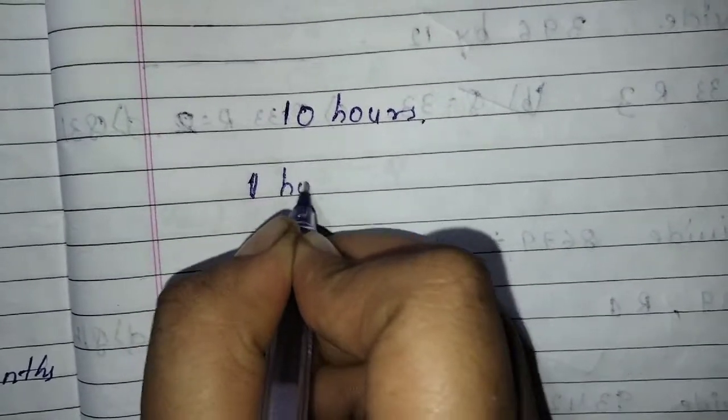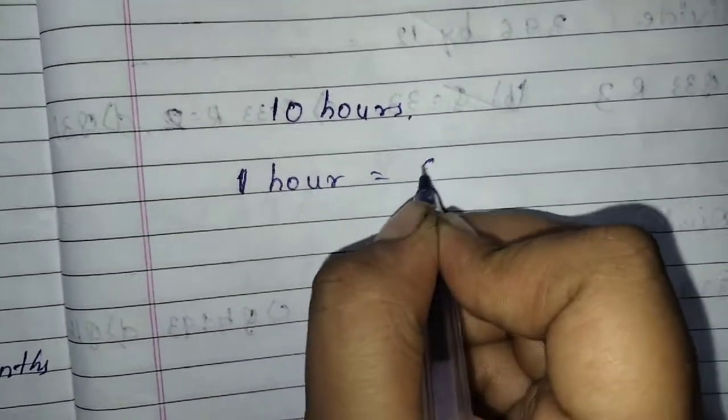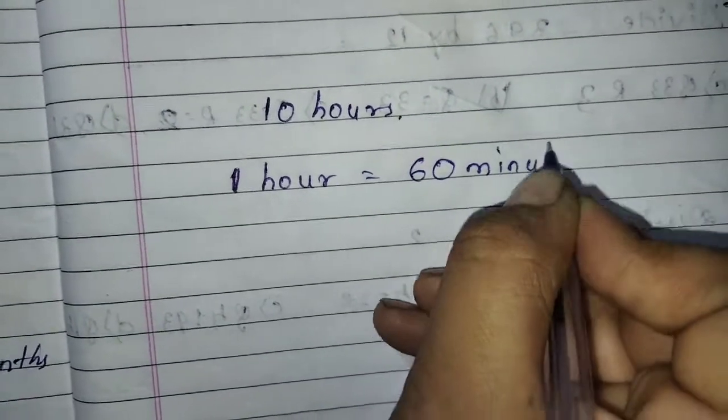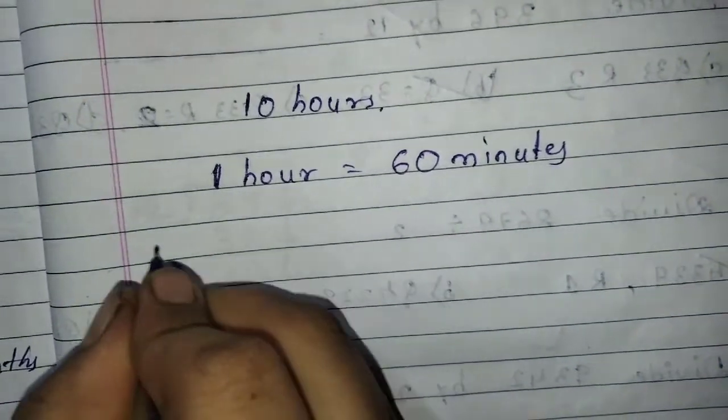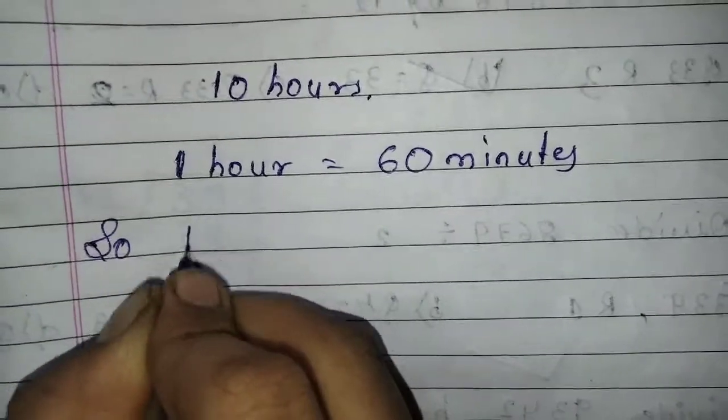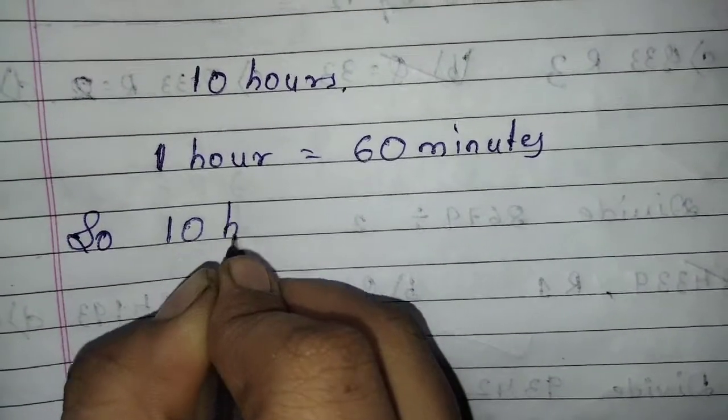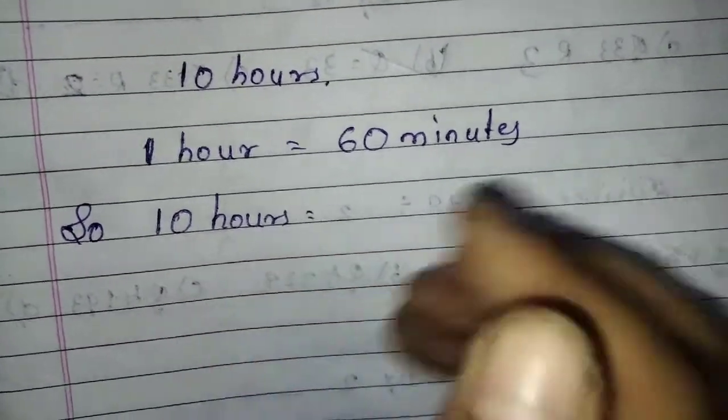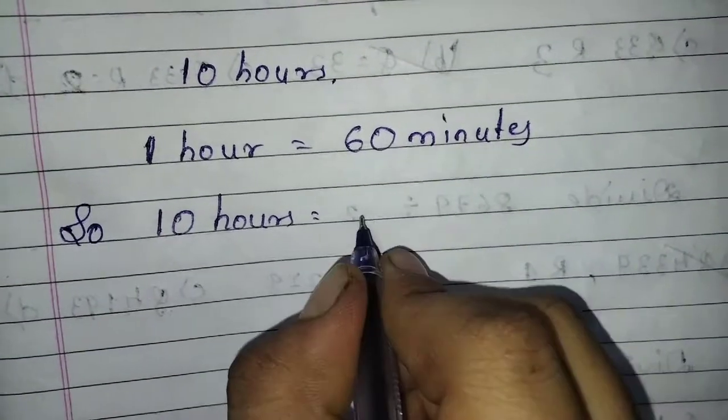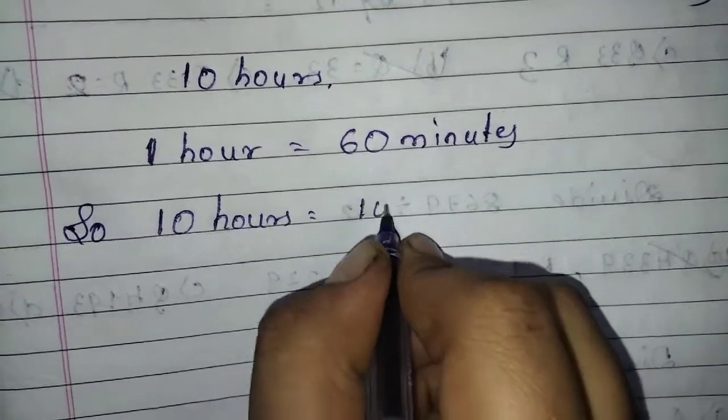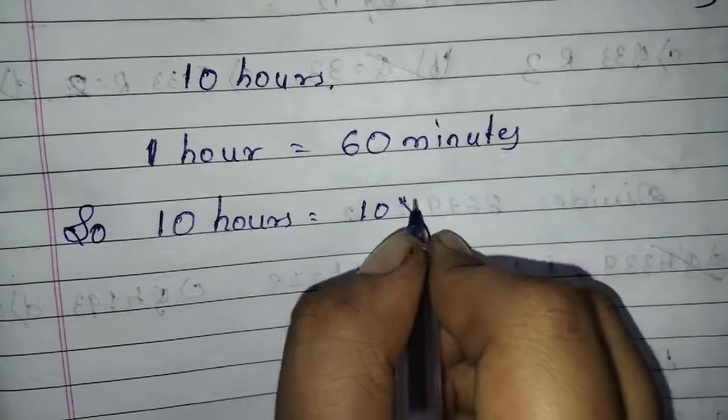1 hour is equal to 60 minutes. So 10 hours is equal to 10 times 60.